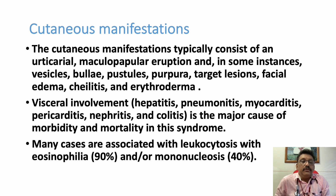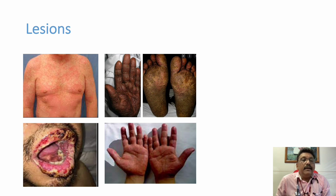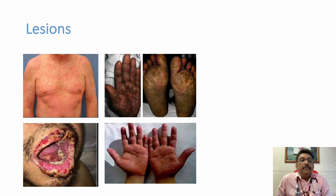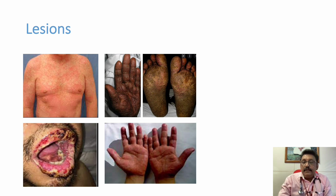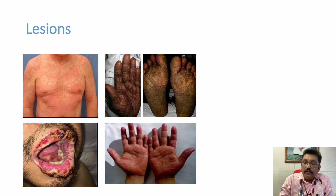Blood cell abnormalities are common: leukocytosis and eosinophilia in 90% of cases, mononucleosis in 40%. The patient can have generalized red rashes with oral mucosa, palms, and soles involved. Palm and sole involvement with mucosal involvement is very classically seen in drug-induced rashes, whereas viral exanthematous fevers may not involve the palms and mouth.